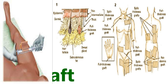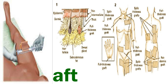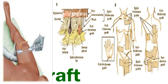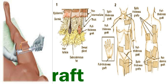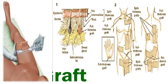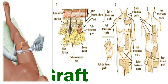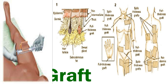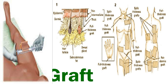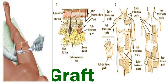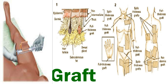Thicker skin grafts tend to have better cosmesis because of the large amount of dermis present. The buttock and lateral hip can supply large quantities of STSG when needed. The thinner the graft taken, the higher the number of skin grafts that can be harvested from that donor site.